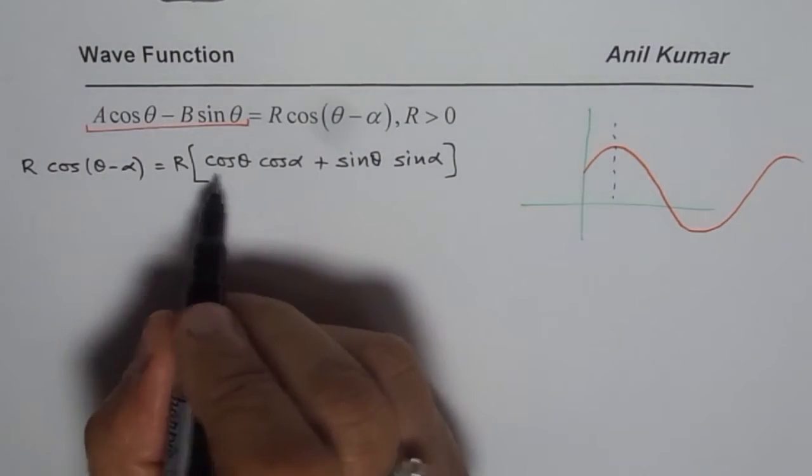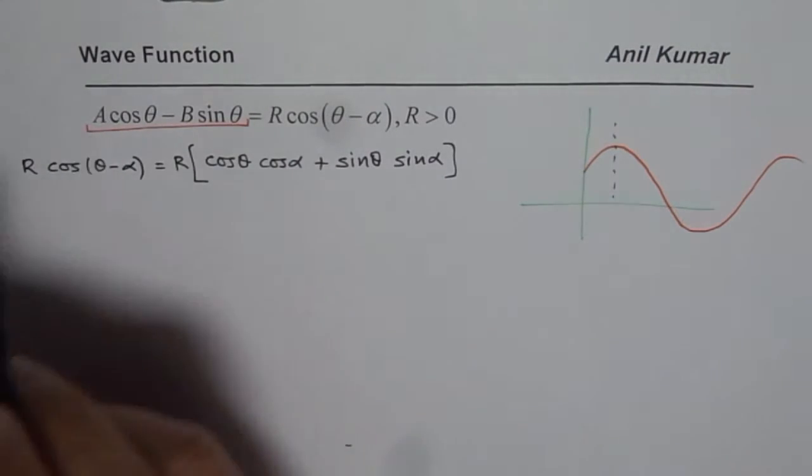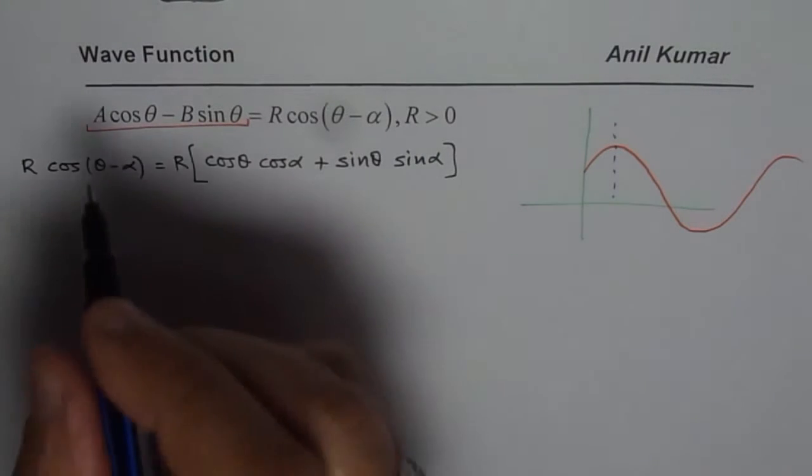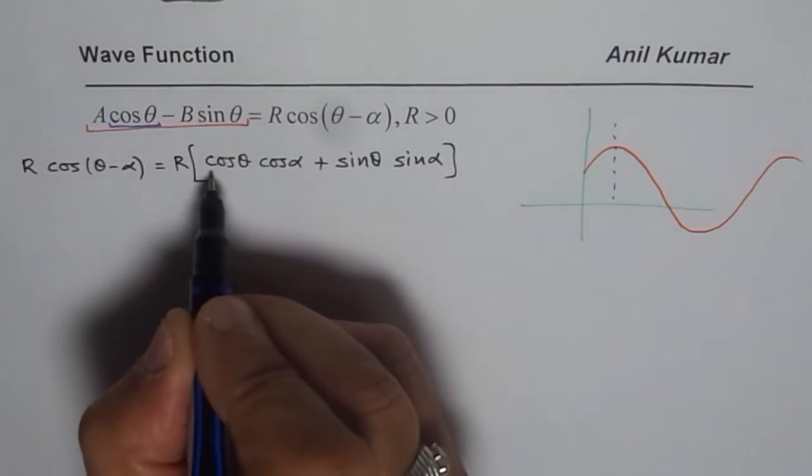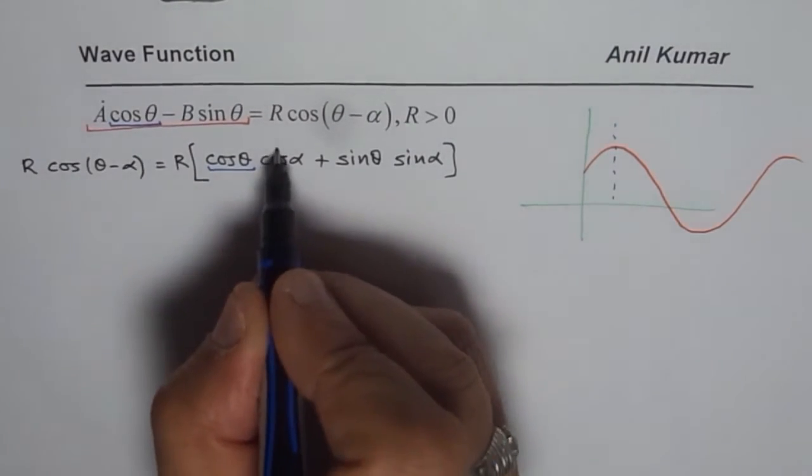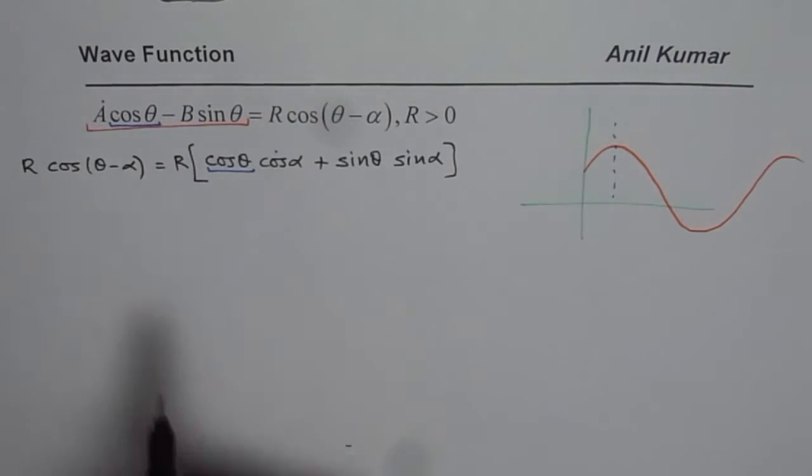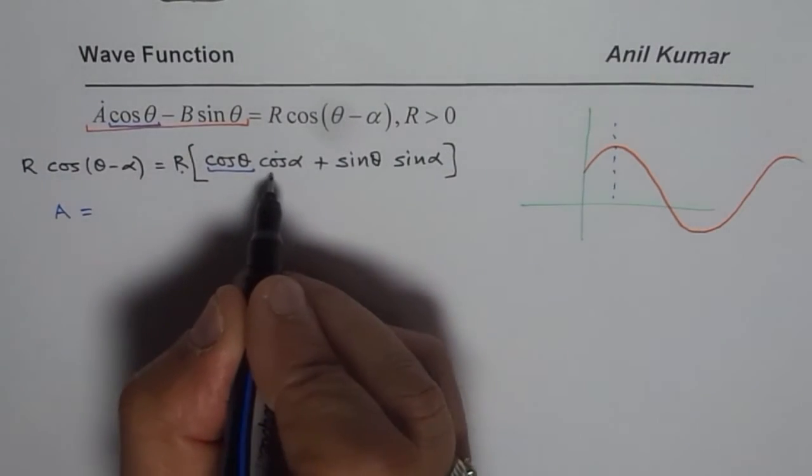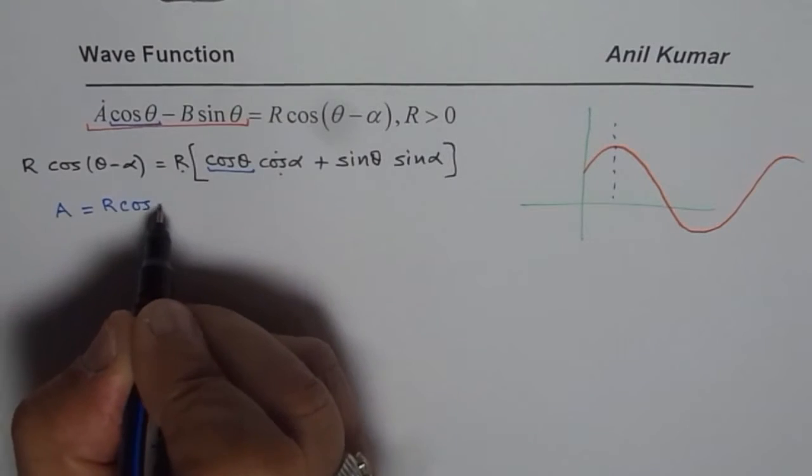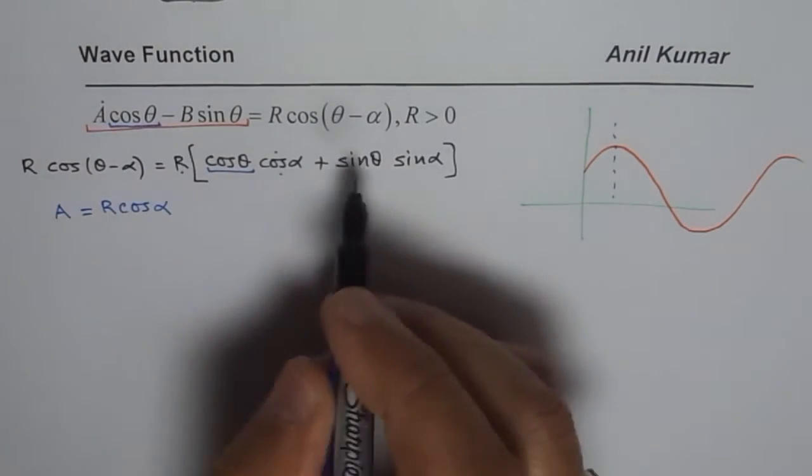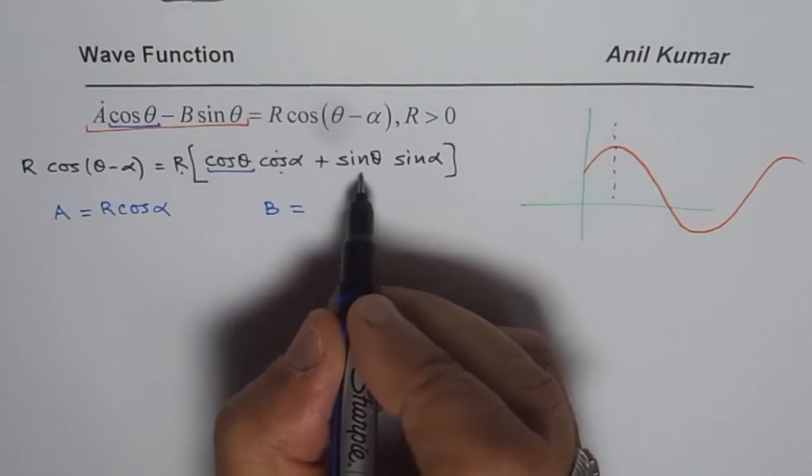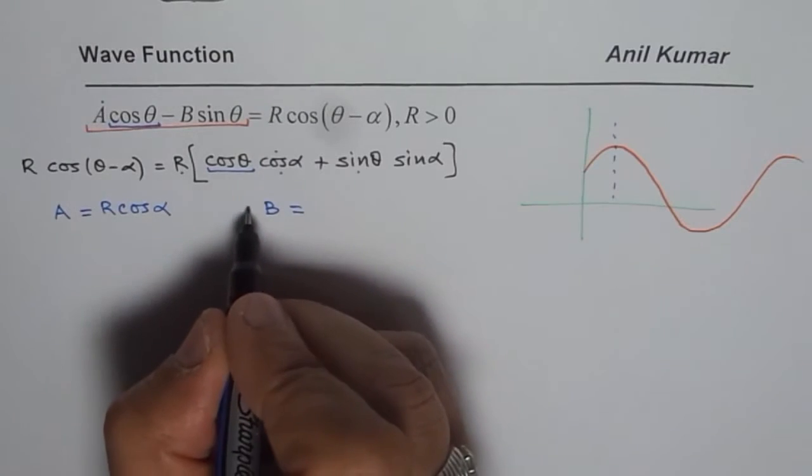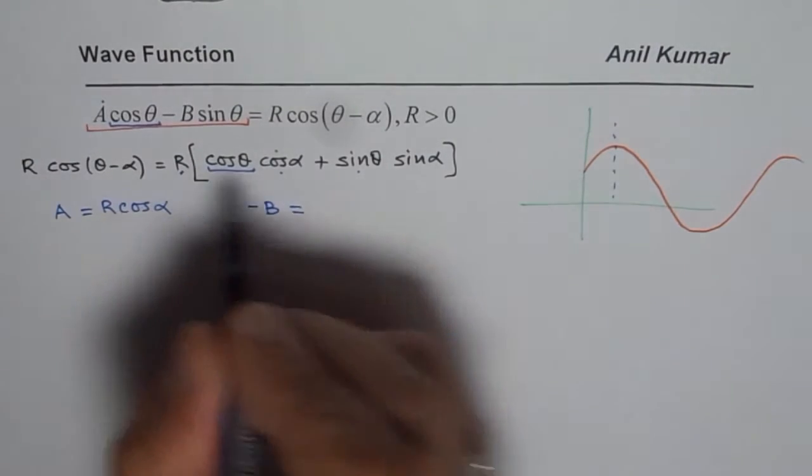Now if you compare with the left side, then what do you notice? You notice that cos θ is already there. So A should be equal to R times cos α. Comparing these we can write A equals R cos α and B, since we have minus B here, minus B equals R sin α.